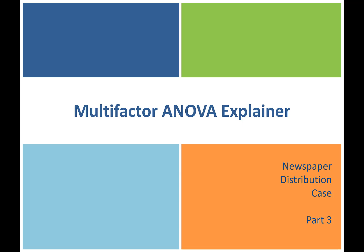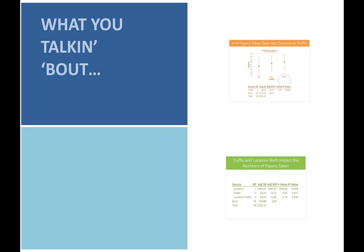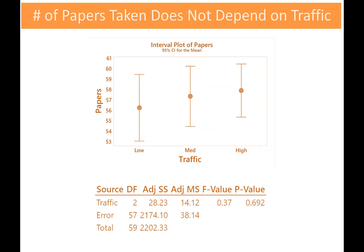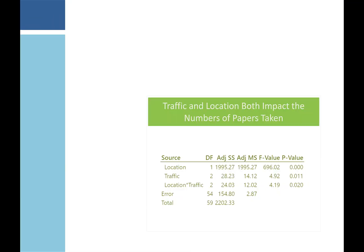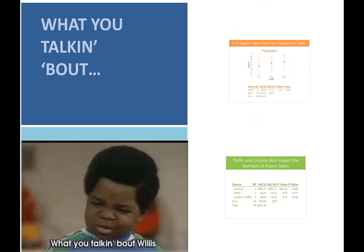Welcome back to the multi-factor ANOVA explainer for part three. If you missed what we did before, here's the 30-second overview. We had Arnold, who got really confused because we ran a multi-factor ANOVA after running a single-factor ANOVA. The single-factor ANOVA showed traffic wasn't a significant predictor of how many newspapers were taken. When we ran the multi-factor ANOVA, all of a sudden traffic is a significant factor. Arnold's confused — we don't know what's going on.